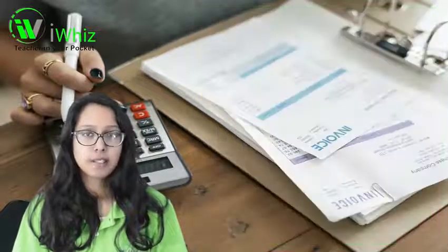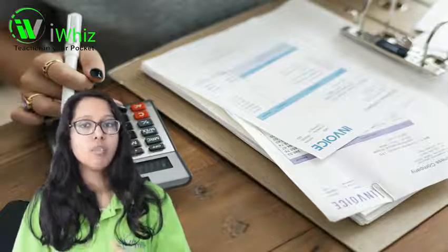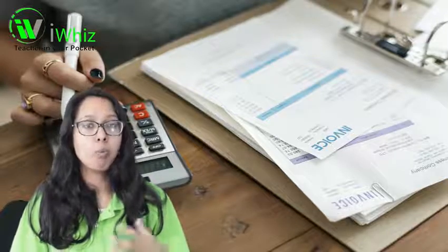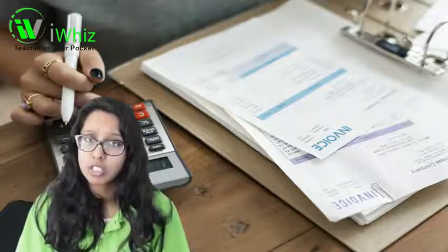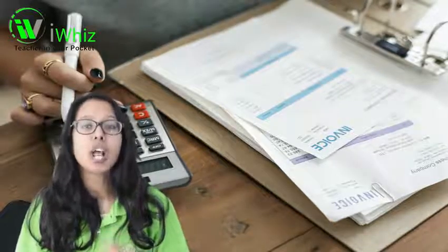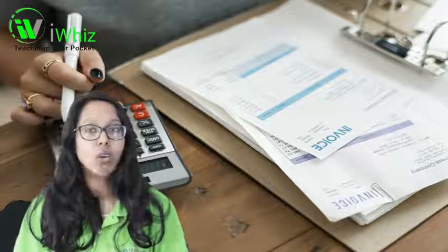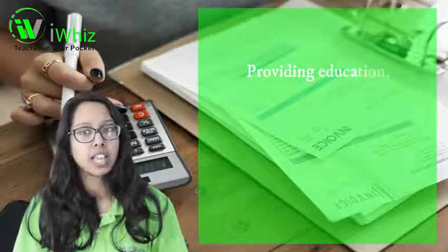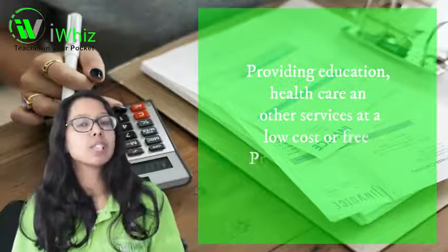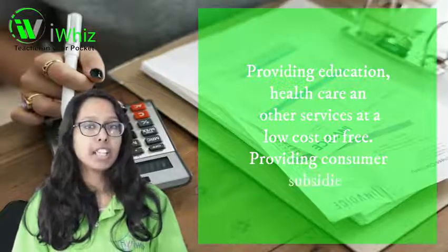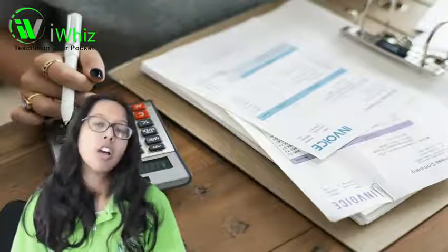With positive externalities, if people acknowledge the social benefit of a specific good or service, they demand more of it. The price increases as demand increases. The government encourages positive externalities by advertising on radio or television, providing education and healthcare, and offering other services at low or no cost. Providing consumer subsidies, or making these subsidies lower than the cost of a good, also encourages positive externalities.